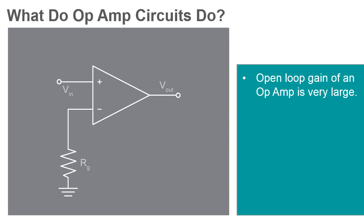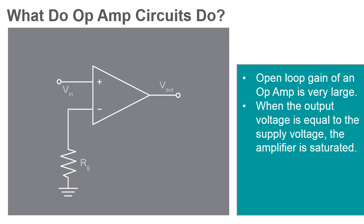This means that very small differences between the two inputs will drive the amplifier output nearly to the supply voltage, which is as high as it can go. These conditions where the output voltage is equal to or greater than the supply voltage are referred to as saturation of the amplifier.